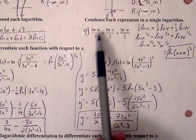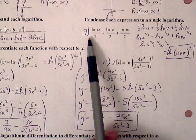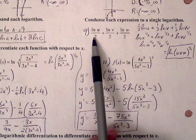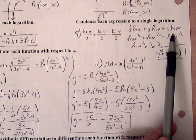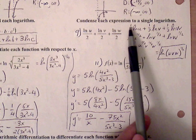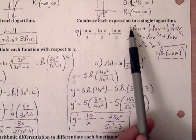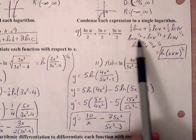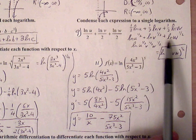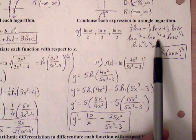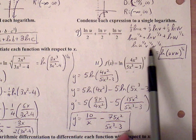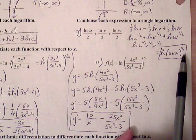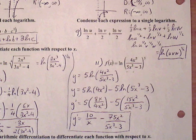Number nine: condensing each expression — we want to write this as a single logarithm. Rewrite as one-half ln of u, one-half ln of v, one-half ln of w. All these coefficients can be brought up as exponents, and finally we use the product property to condense everything to ln of u times v times w, all to the one-half.